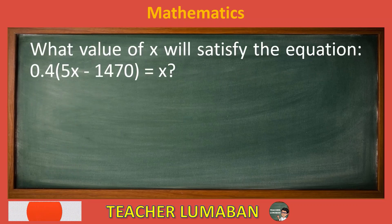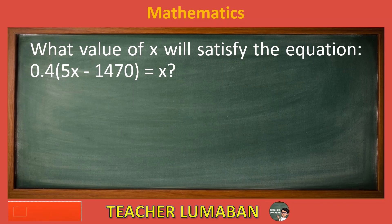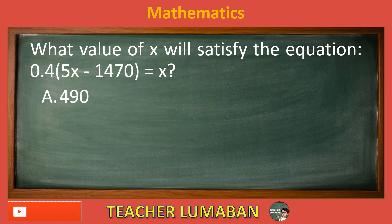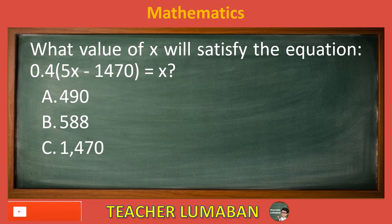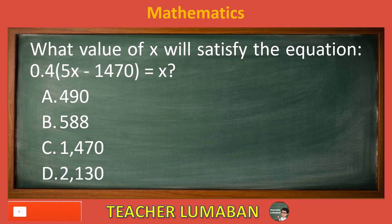What value of X will satisfy the equation? 0.45X minus 1470 equals X. Letter A: 490. Letter B: 588. Letter C: 1470. Letter D: 2130.